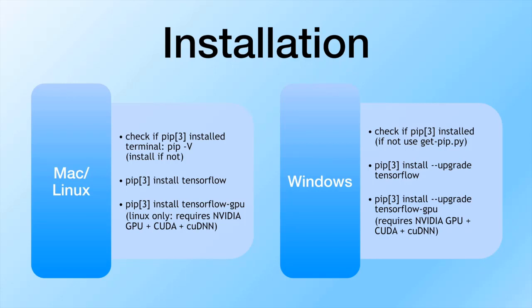Once pip is installed, just run 'pip install tensorflow' to get the CPU-friendly version, which runs on both Mac and Linux and is a much easier install. For the GPU version, it requires more effort and only runs on Linux — not Mac — because it requires NVIDIA GPU support via the CUDA Toolkit and cuDNN. For Windows, you'll also need pip or pip3, but you download a get-pip file to install it, and the command is slightly different: 'pip install --upgrade tensorflow'.